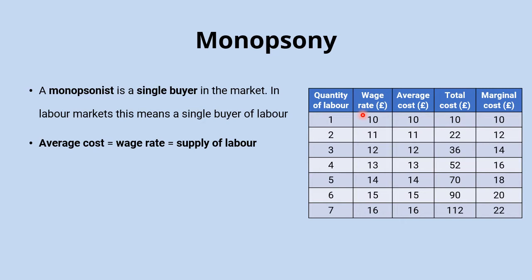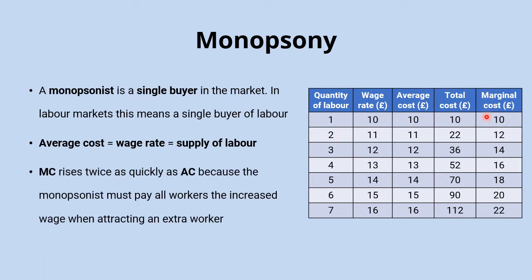In a perfectly competitive market, with workers as wage takers and a perfectly elastic supply curve for labour, that average cost of labour would also be equal to the marginal cost. But that's not the case here, because the monopsonist is the only buyer of labour. In order to attract an additional worker, they need to increase the wage rate not just for that additional worker but for all other workers as well. This means the marginal cost rises twice as steeply as the average cost of labour.